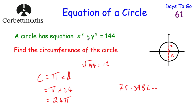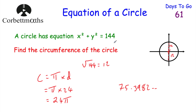In this question, we square rooted the right-hand side to find the radius is 12, then did π times the diameter to get 24π. If the question had asked for the area, we'd find the radius is 12 and do πr squared, giving 144π. So it's important to be able to find the circumference and area of a circle from its equation once you know the radius.